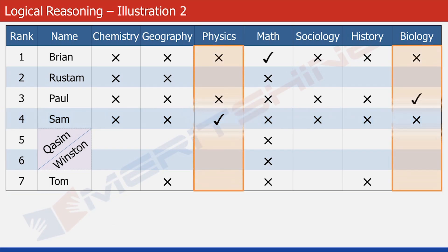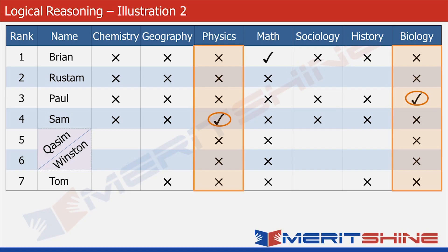Now look at the two highlighted columns — one corresponding to physics and the other to biology. Since a check is already there in both these columns, we can safely cross the rest of the cells. There can be only one check in each column as a subject can be liked by just one of the given seven students. Likewise, there can be just one check in each row since a student cannot like more than one subject as per the question.